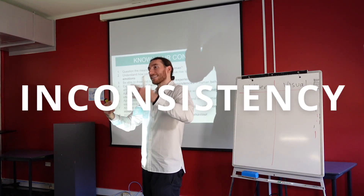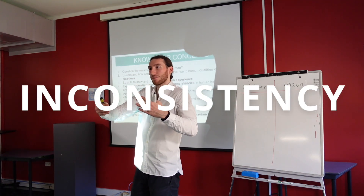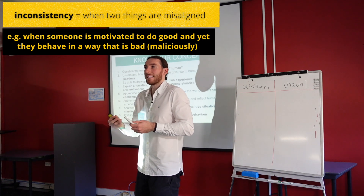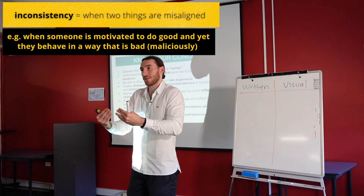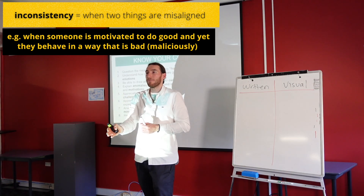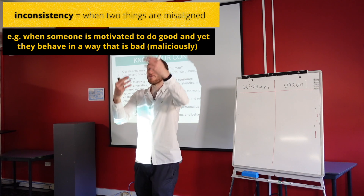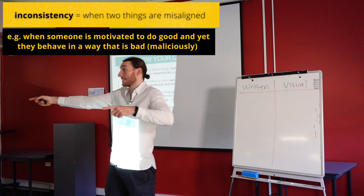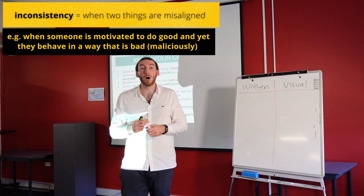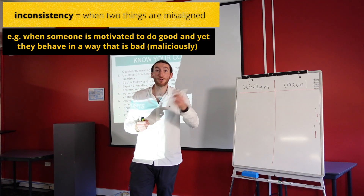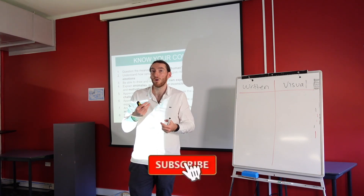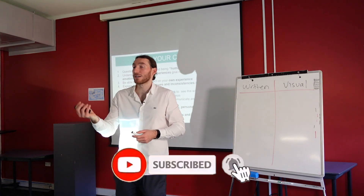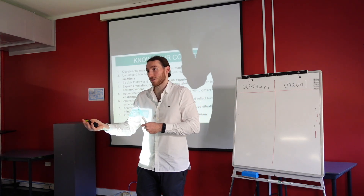An inconsistency? Something conflicting with something else. So that's kind of similar to a paradox, but it doesn't have to be the exact opposite — it's a misalignment of something. So maybe you're motivated one way, but you behave in a different way. Someone is motivated to do good for others, but then all of their behaviors are actually malicious towards others.